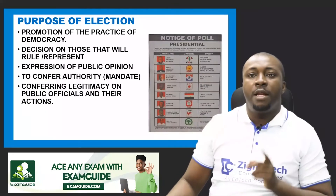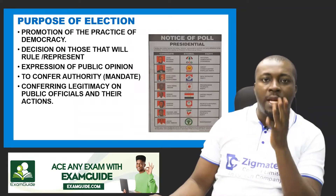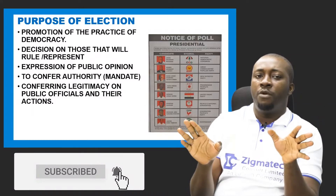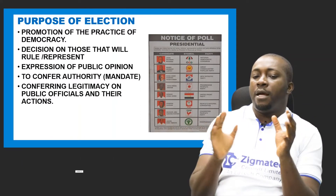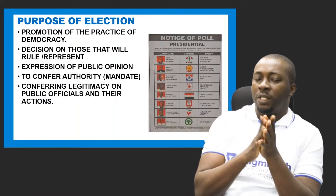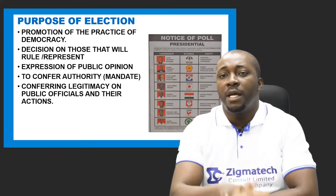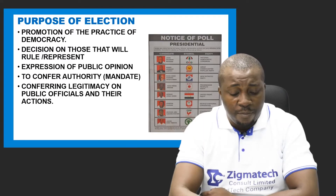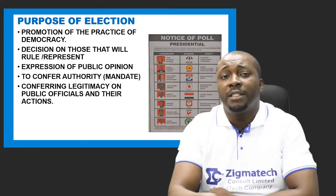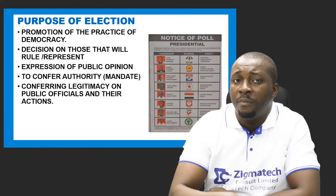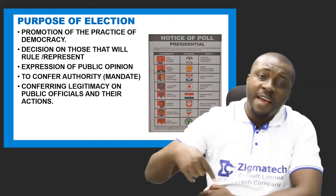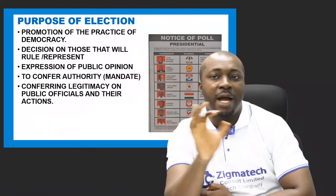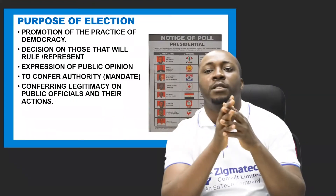Now let's look at the purposes — why we do elections in our societies. Number one is promotion of the practice of democracy. A representative democracy is not complete without election. There must be election because leaders emerge through the process of election. People choose their leaders because everybody cannot be in government at the same time making decisions. So it promotes democracy.